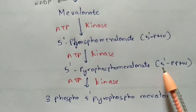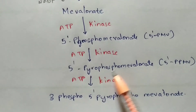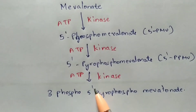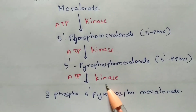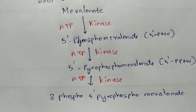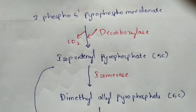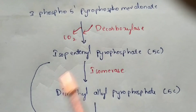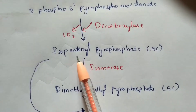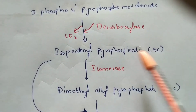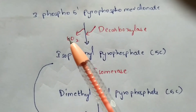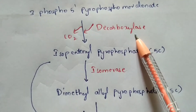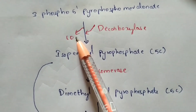In the third reaction of mevalonate, ATP and kinase are utilized to form 3-phospho-5'-pyrophospho mevalonate. From here, isopentenyl pyrophosphate — a 5-carbon compound — is formed through decarboxylation, where CO2 is released. The enzyme utilized in decarboxylation is decarboxylase.